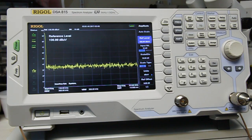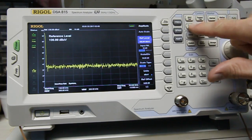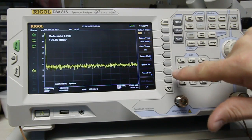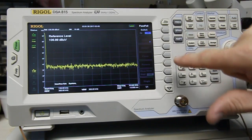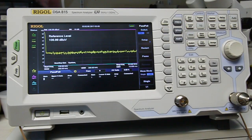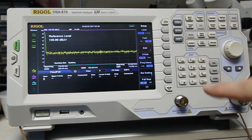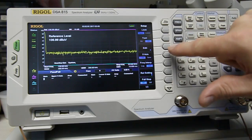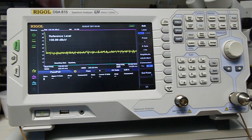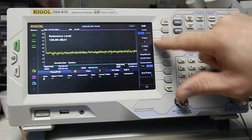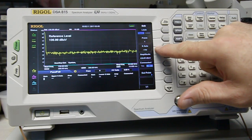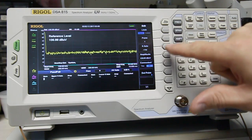First thing I'm going to do is I'm going to set up the limit lines. So I'm going to go into trace pass fail, turn it on. I'm going to go to setup, edit. So we're going to enter in our first point and we're going to enter in the frequency of our first point. That's the 150 kilohertz.